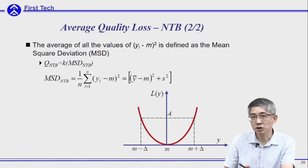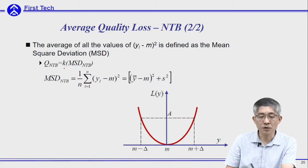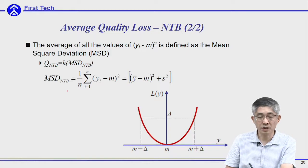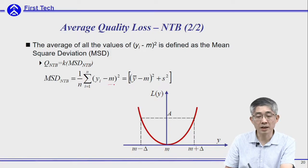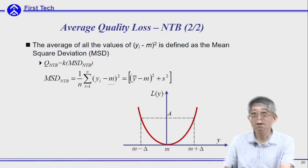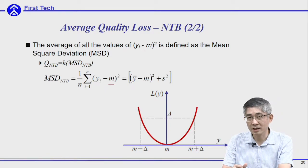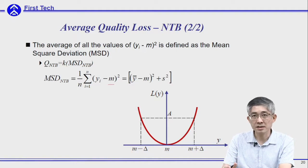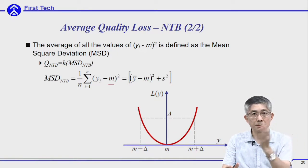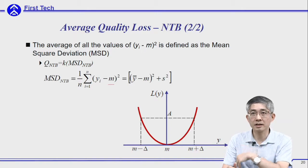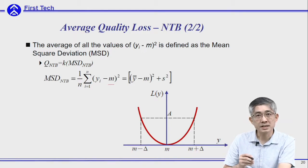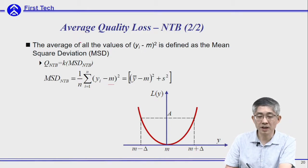The average quality loss equals k multiplied by the mean squared deviation (MSD), which is the deviation of the output from the target m. Although k can be obtained by connecting previous quality control criteria, k is only a constant. So if we want to determine which design is better, we can neglect this constant and simply look at the mean squared deviation MSD.